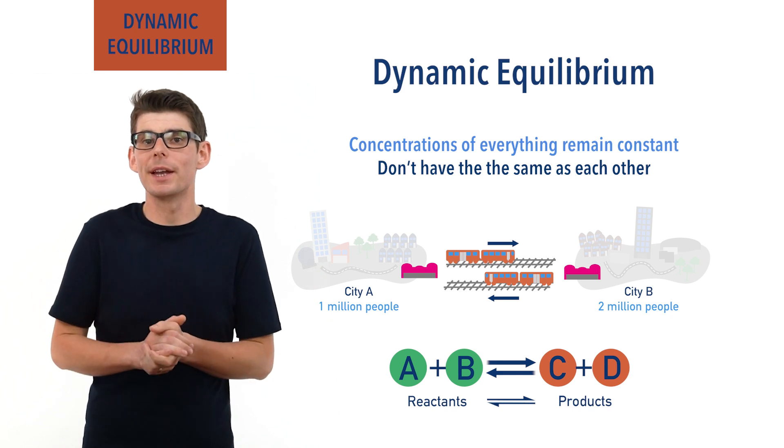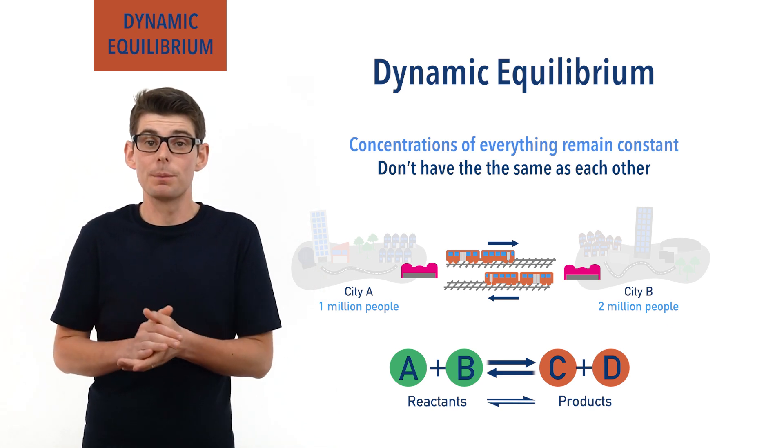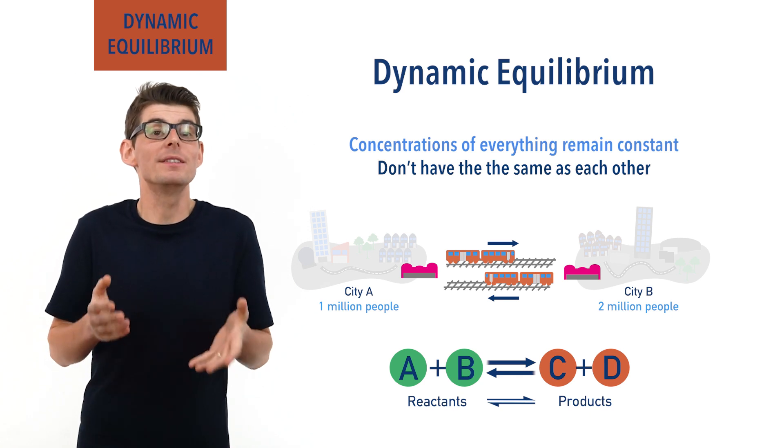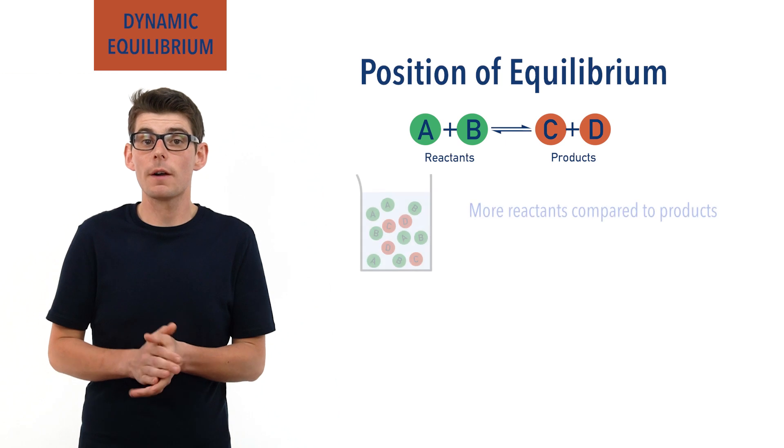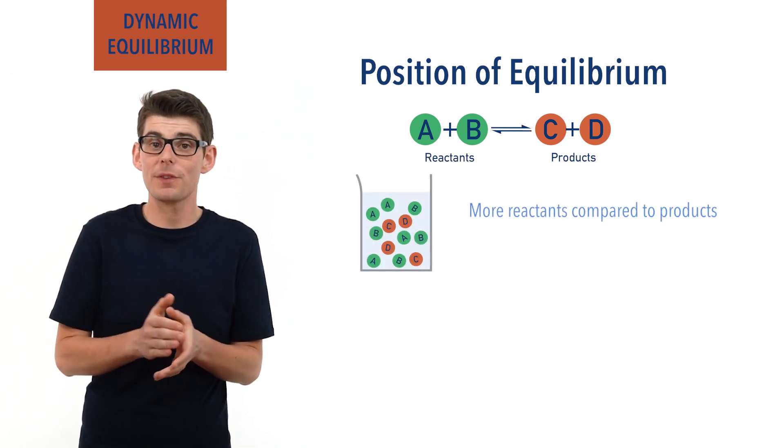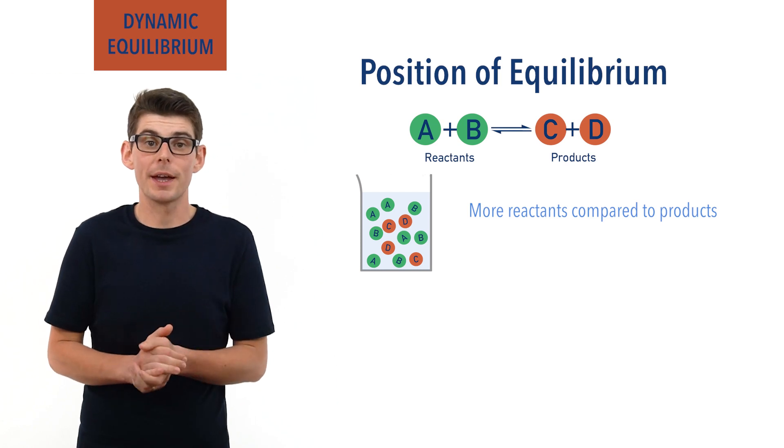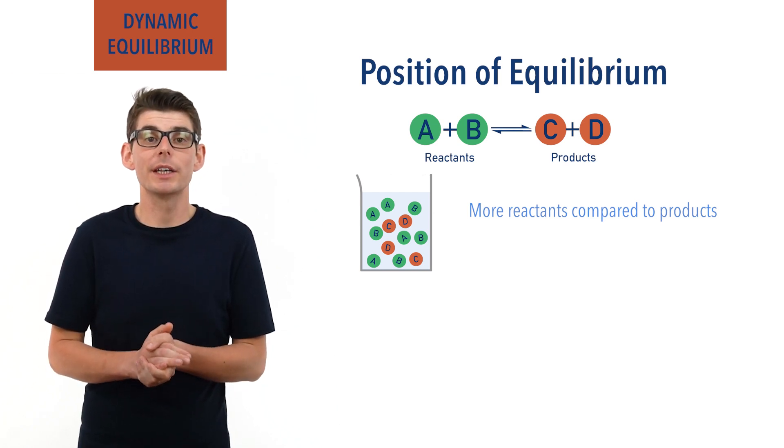We describe the relationship between the amounts of products and reactants in the equilibrium mixture as the position of equilibrium. The more reactants there are compared to the products, the less the forward reaction is said to be favoured compared to the backward reaction, and the position of equilibrium is said to lie to the left.